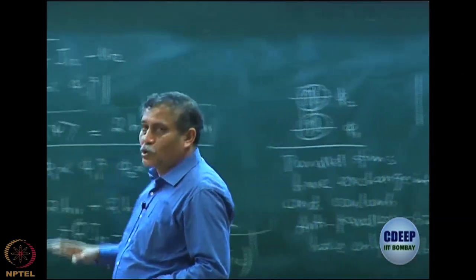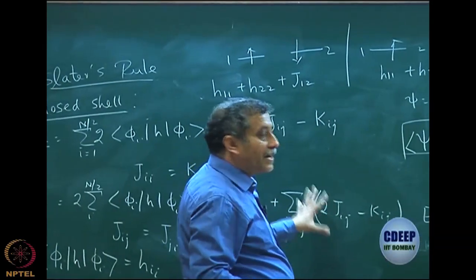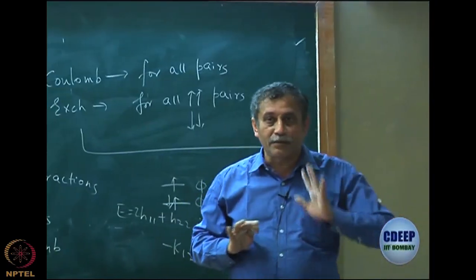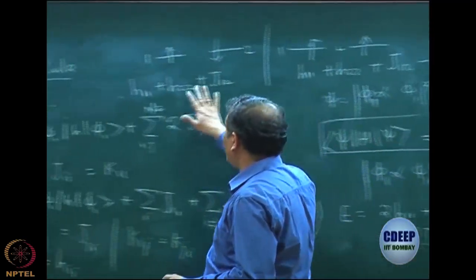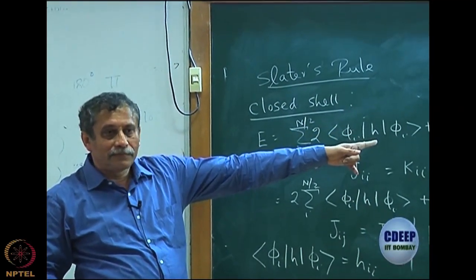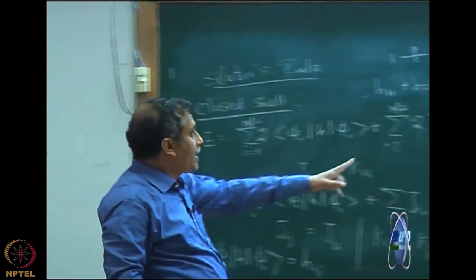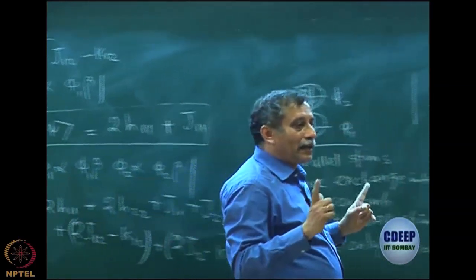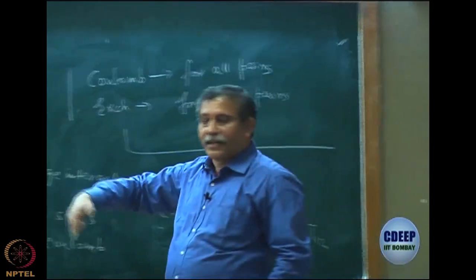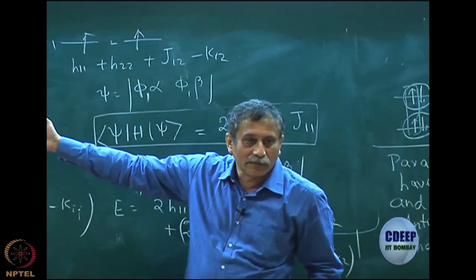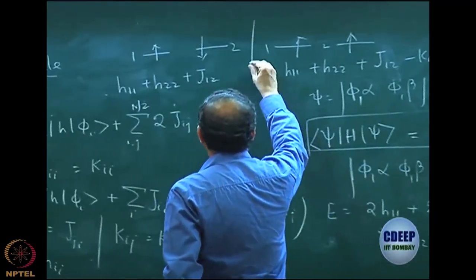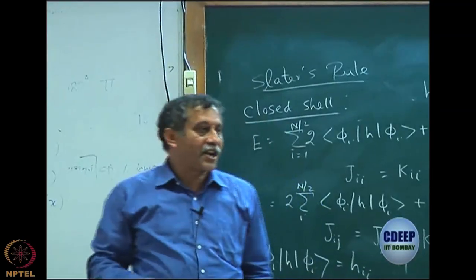It is very important to note that the exchange integral K and Coulomb integral J, when integrated over space orbitals, are always positive. So K is a positive quantity. Therefore the parallel spin state has lower energy — that is essentially Hund's rule. If you have degenerate orbitals, the electrons go parallel. This is a proof of Hund's rule.